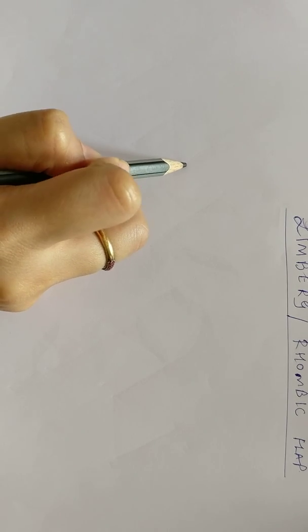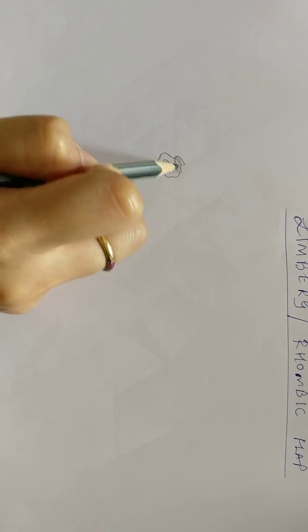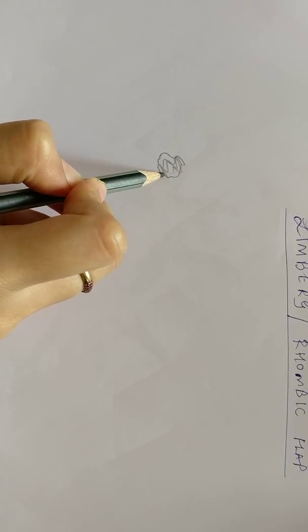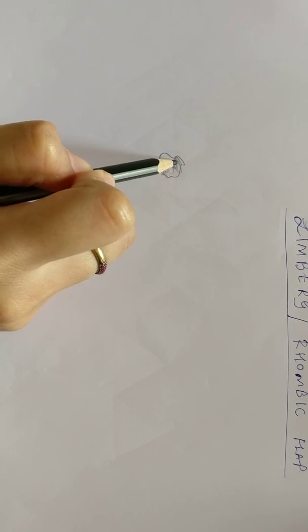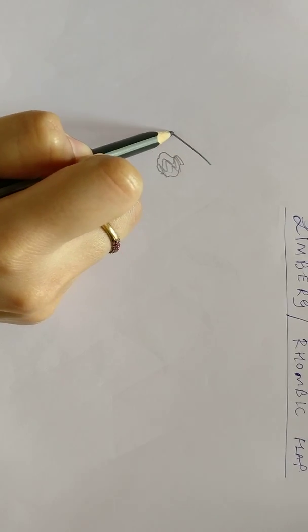Now in this case, how it differs from a transposition or a rotation flap is that we don't triangulate our defect but instead convert it into a rhombic flap. So this is our irregular shaped defect. What we need to do is convert it into a rhombic.